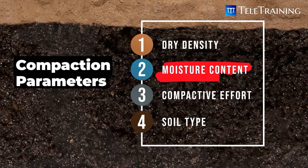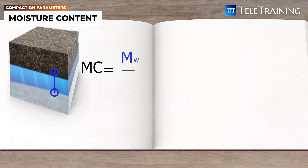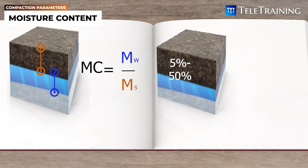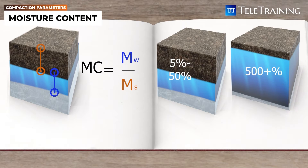Let's see the moisture content now. Moisture content is defined as the mass of water in soil divided by the soil's solid mass. Typical natural soil moisture content in Australia is from 5% to 50%, although in some marine and organic soils it can range up to 500% or higher.